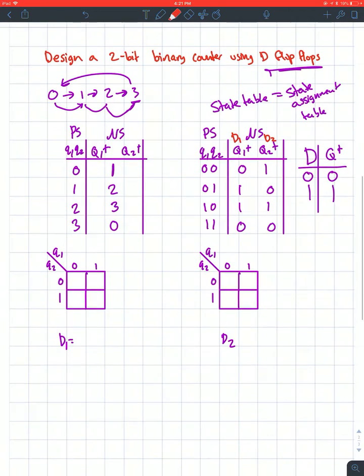How do we fill our K-map? We look at our state assignment table. This is for D1. I'll look at my D1 column and I need my values for Q1 and Q2. I only want 1 terms—that's what gives me my equation for D1. At 01, I have a 1, and at 10, I have a 1 as well.